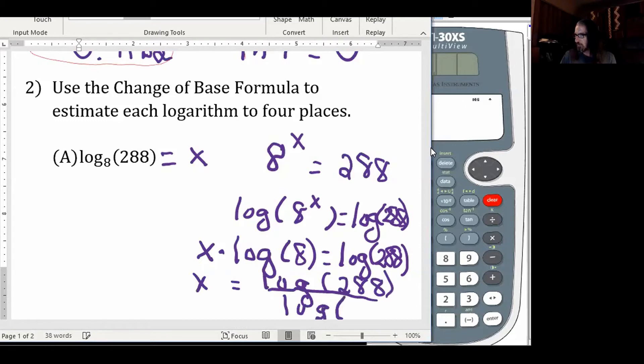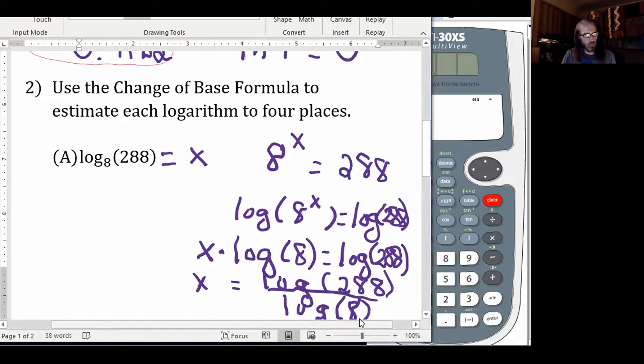The change of base formula, in words, is telling us, take some new base. Take a base that the calculator can work with. Take the common log, or base 10, or the natural log, i.e. base e. Take the logarithm of the same argument in the new base, divided by the log of the old base in the new base.